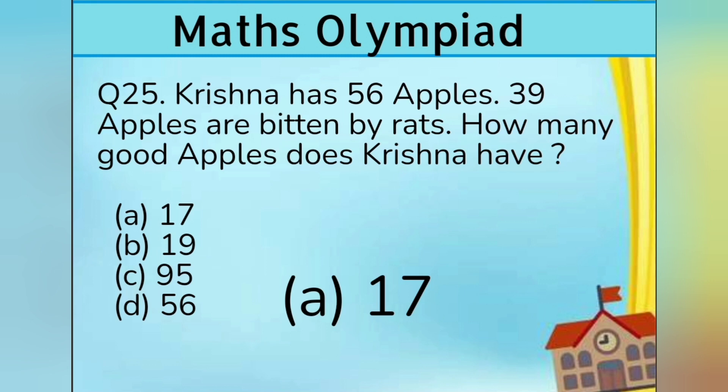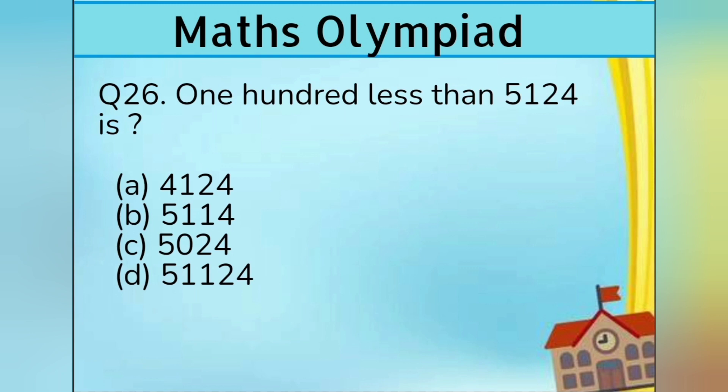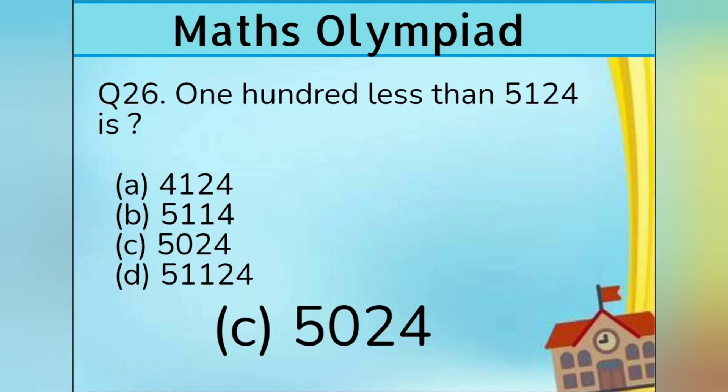Question number 26. 100 less than 5,124 is: Option A 4,124, Option B 5,114, Option C 5,024, Option D 51,124. Answer is Option C 5,024.